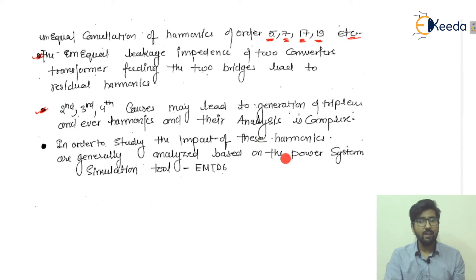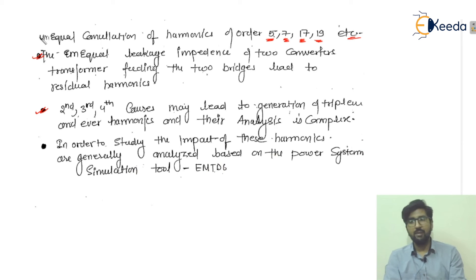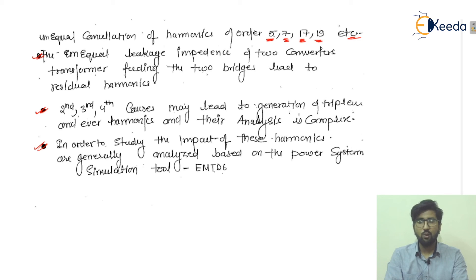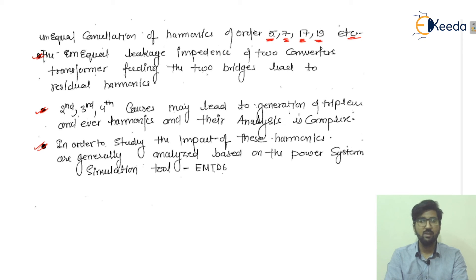In order to study the impact of these non-characteristic harmonics from the second, third, and fourth causes, they are generally analyzed using a power system simulation tool called EMTDC. There are many studies related to this analysis, but in general we use the EMTDC simulation tool. I hope you have understood all the information related to non-characteristic harmonics and the 12-pulse converter. Thank you so much.